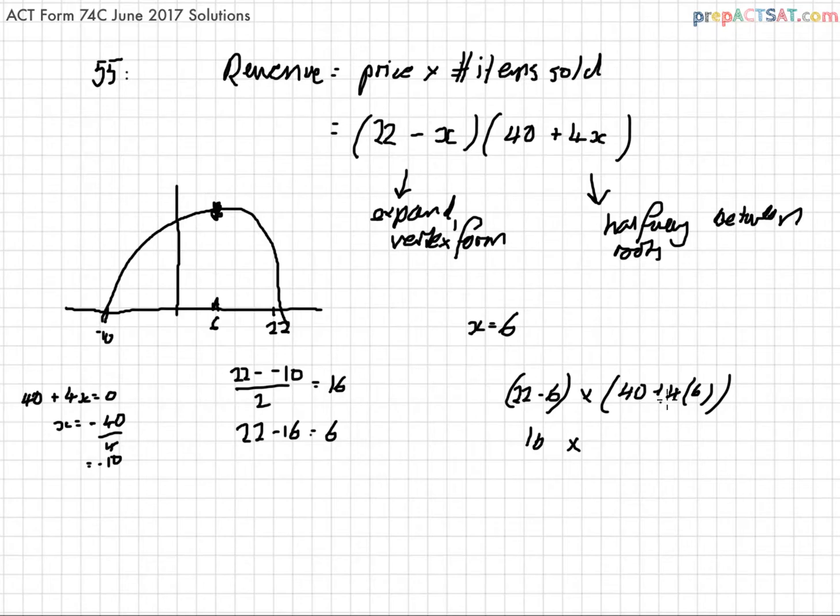That is 4 times 6 equals 24 plus 40 equals 64. So 16 times 64 is 1024, which is answer E.